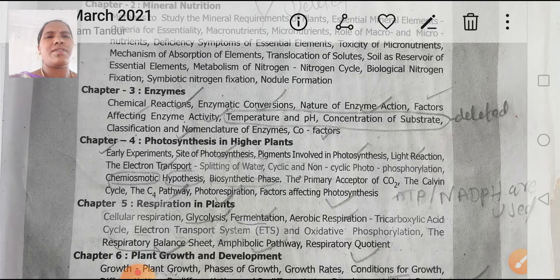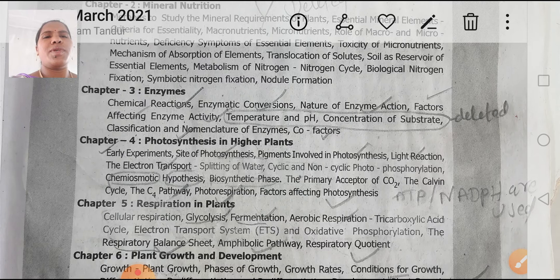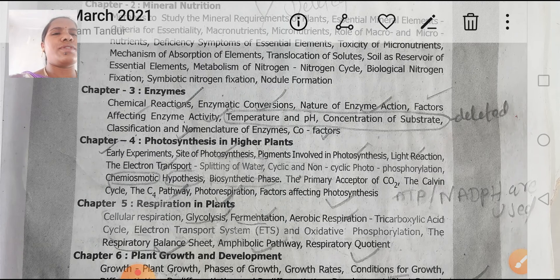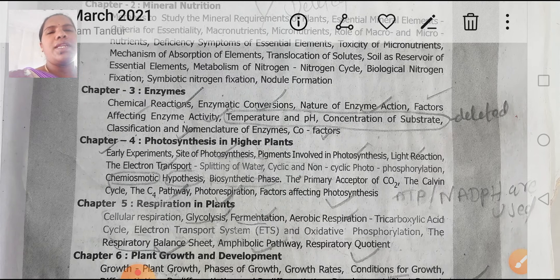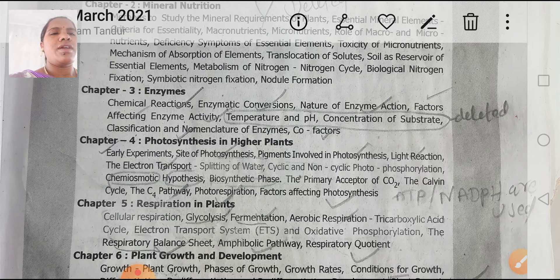Next, Chapter 4: Photosynthesis in Higher Plants. From this chapter, only early experiments, electron transport, the chemiosmotic hypothesis, C4 pathway, photorespiration, and factors affecting photosynthesis are included. Some portions are deleted.